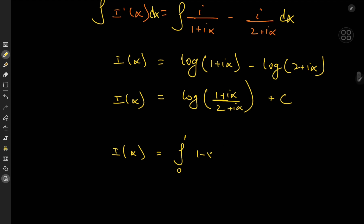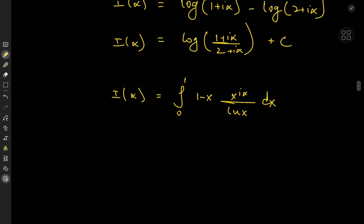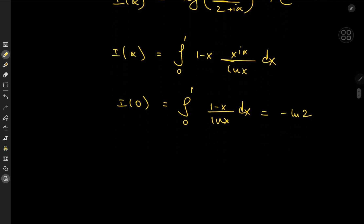We can combine those to get log of (1 plus i alpha) over (2 plus i alpha), as long as we don't forget a constant of integration C that we must evaluate. Recall the integral function: the integral from 0 to 1 of (1 minus x) times x to the (i alpha) over log x, dx. As alpha approaches 0, we get the integral from 0 to 1 of (1 minus x) over log x, dx, which is one of the famous integrals used to illustrate Feynman's trick. That evaluates to negative log 2, or equivalently log(1/2).